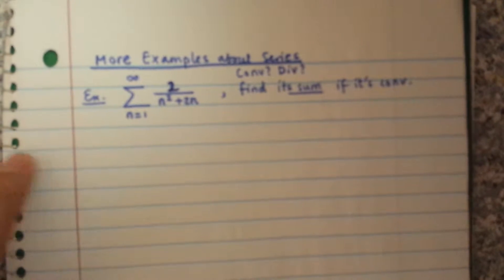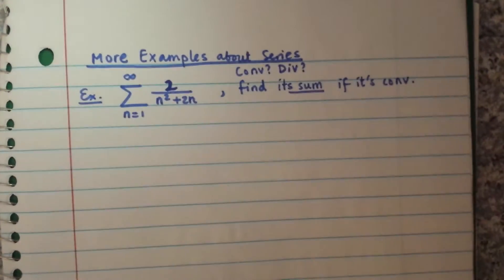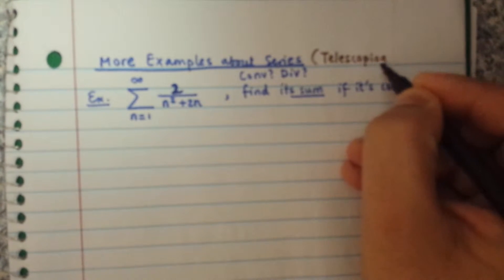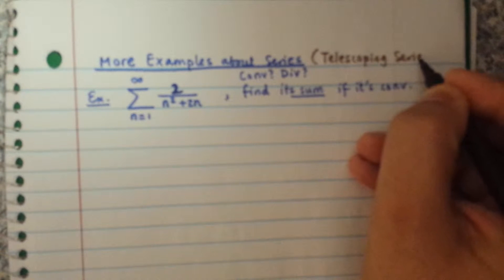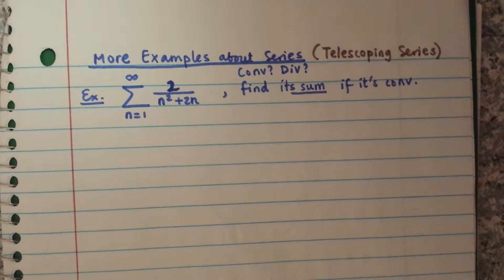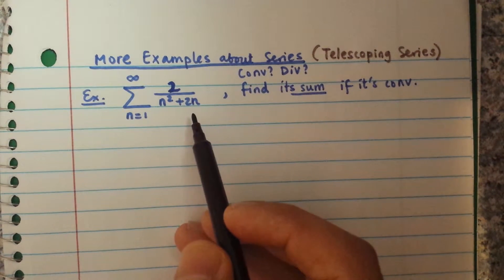Hello folks. Today I'm going to talk about more examples about series. This is just one example related to the telescoping series. The problem is: the sum from n equals 1 to infinity of 2 over n squared plus 2n — is it convergent or divergent? And the problem also asks to find its sum.